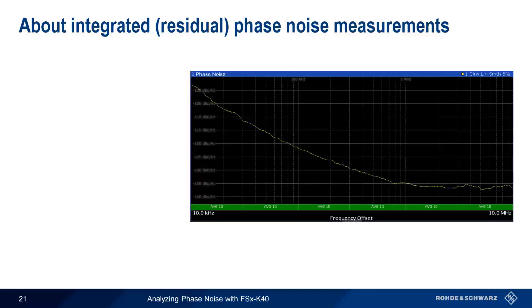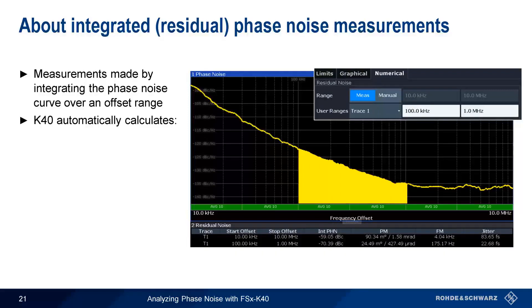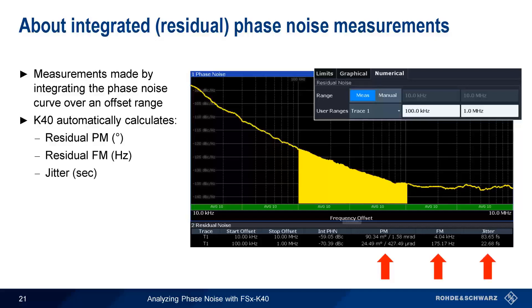Throughout this presentation we've been looking at phase noise in units of dBc per hertz at a given offset, plotted as a curve. Another way of quantifying phase noise is by integrating it between a pair of offsets — these are called integrated or residual measurements, and can be automatically calculated and displayed by the K40 option. The results include residual phase modulation in degrees, residual frequency modulation in hertz, and jitter in units of seconds, making it easy to convert measured phase noise to jitter or degrees.